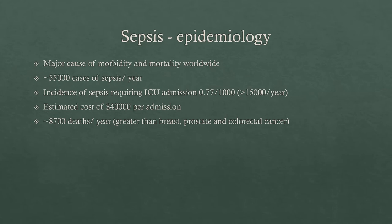We know there's a big burden of morbidity and mortality worldwide. There are around 55,000 cases of sepsis per year in Australia. When we look at the incidence of sepsis requiring ICU admission, it's reported as around 0.77 per thousand people, or greater than 15,000 cases a year. The estimated cost is around $40,000 per ICU admission, and that doesn't take into account hospital admissions that don't make it to ICU. It accounts for around 8,700 deaths per year — a larger number than breast, prostate and colorectal cancer.